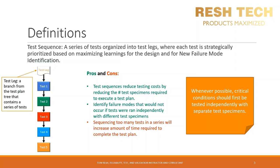What are some of the pros and cons for sequencing tests? Some of the pros include: test sequences reduce testing costs by reducing the number of test specimens required to execute a test plan. Also, it helps you identify failure modes that would not occur if tests were run independently with different test specimens. A negative aspect is that sequencing too many tests in a series will increase the amount of time required to complete the test plan, so keep that in mind when you're sequencing tests.